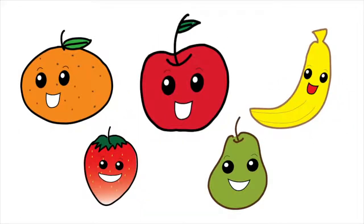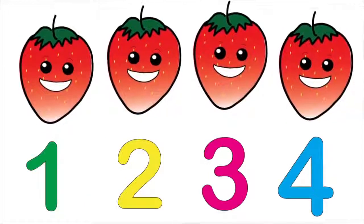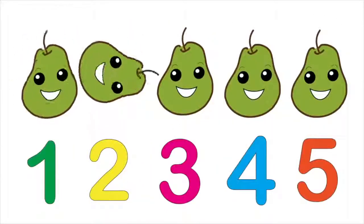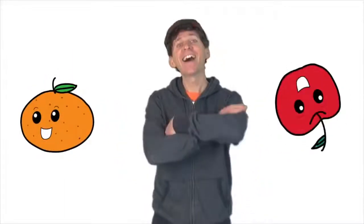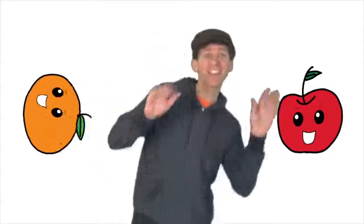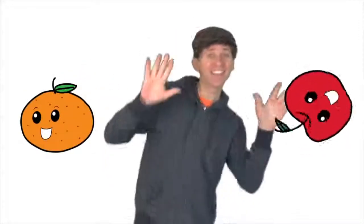Let's count some more. Four strawberries. Four strawberries. Four claps. One, two, three, four. Five pears. Five pears. Five claps. One, two, three, four, five. We did it! I can clap. I can sing. I can do anything. I can clap. I can sing. I can do anything.